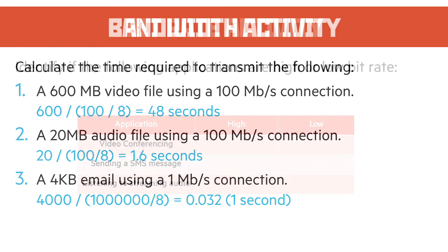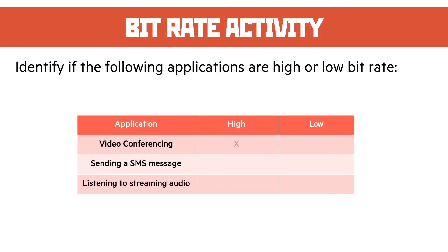Bit rates. Video conferencing is a high bit rate activity — we need to send a lot of data in a small amount of time. Sending an SMS text message, which is just 100 and something characters, is going to be a low bit rate activity. Listening to streamed audio is a bit of a difficult one; we would classify that as a high bit rate activity because a lot of data needs to come downstream.